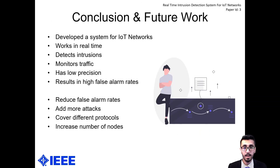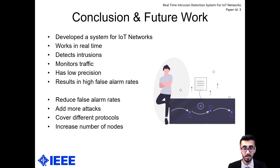With this, we have come to the end of our presentation. We developed a system for IoT networks that works in real time, detects intrusions, and monitors traffic. However, it does have low precision and results in high false alarm rates. Future work can be done to reduce this false alarm rate, add more attack types, cover different protocols, and increase the number of nodes — which will help improve inclusivity and build a more robust model. Thank you for watching.